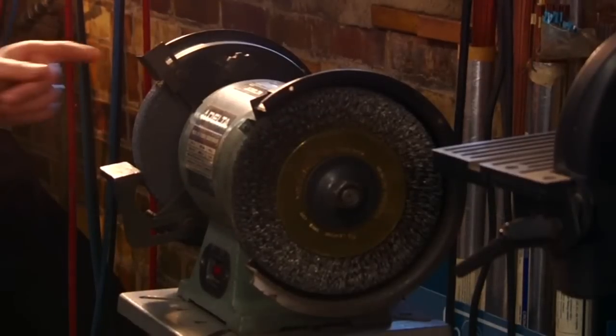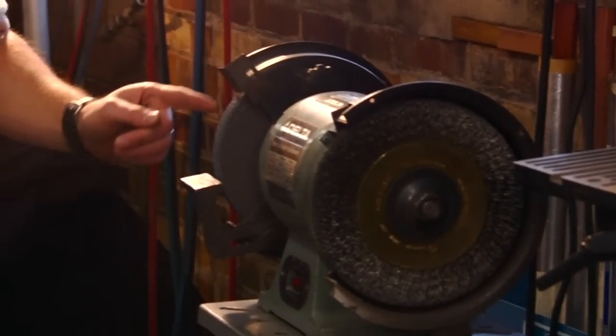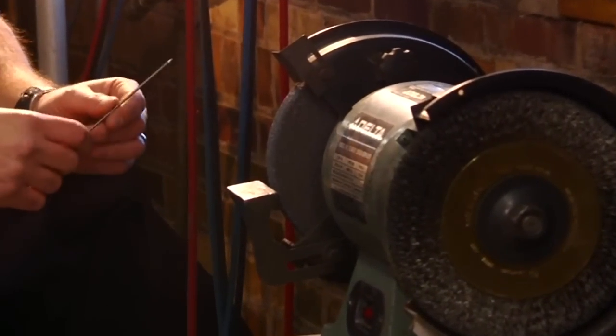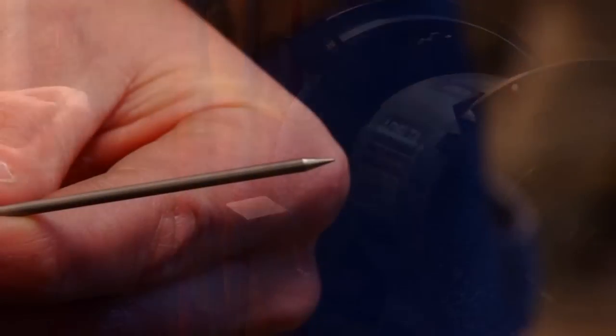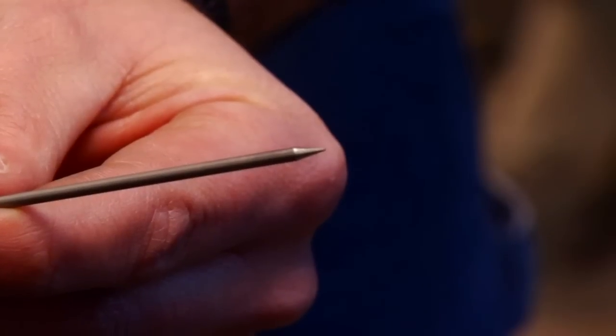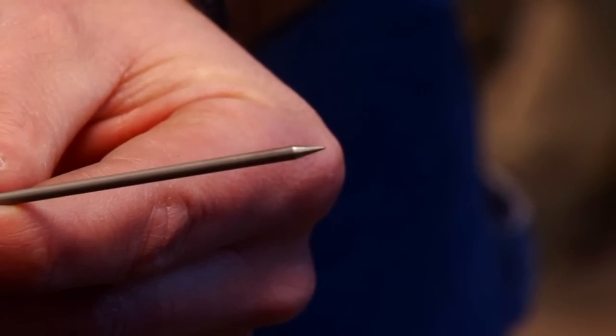I have my grinder set up with a diamond grinding wheel. Tungsten is a very hard metal and although a typical grinding wheel can be used, you won't be able to achieve as good a finish on the sharpened tungsten and you will wear out your wheel sooner than if it were diamond.